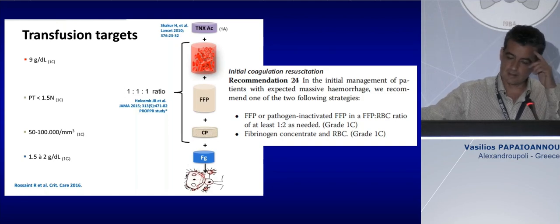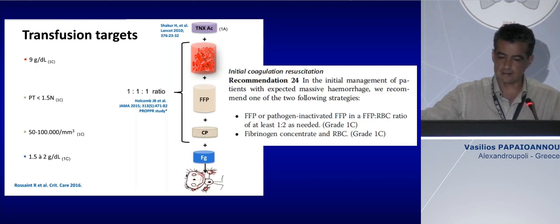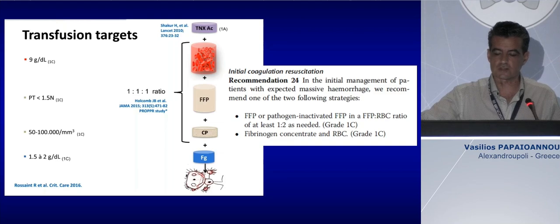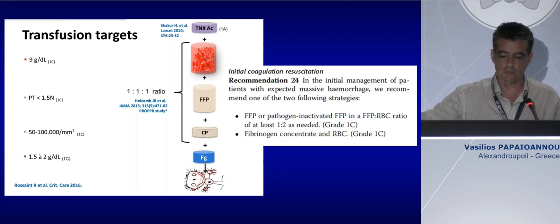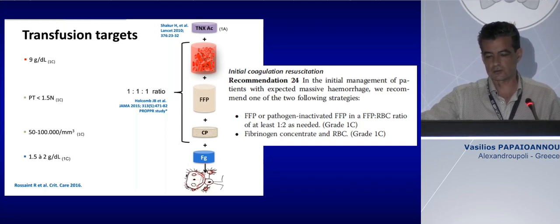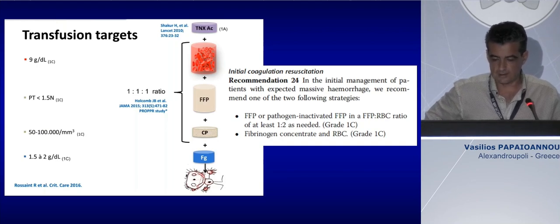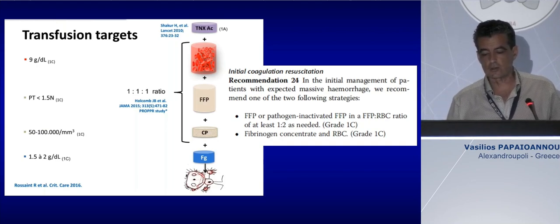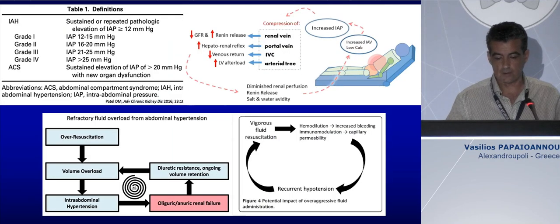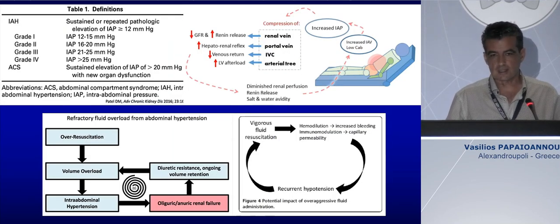There is debate in the literature regarding the fixed ratio of transfusion. The American guidelines, largely based on studies from Iraq war casualties, showed that a 1:1:1 ratio of erythrocytes to fresh frozen plasma to platelets restores blood coagulation and corrects acidosis more rapidly compared to other ratios. In the last guidelines, the European guidelines have also changed their practice.